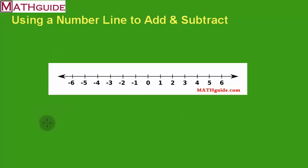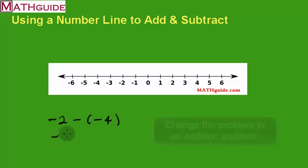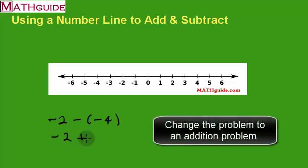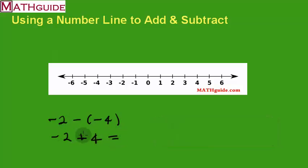Let's talk about subtraction. Let's say I have negative two subtracting negative four. How do I change this to an addition problem? Leave the first number alone, change the sign to addition, and take the opposite of the second number. The opposite of negative four is positive four. We start at negative two and go four units to the right — because that is a positive four — one, two, three, four. I'm at the number two. Two is my answer.